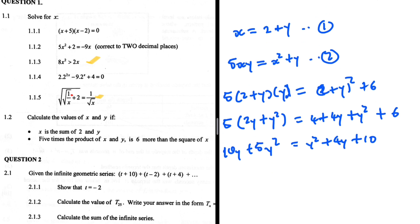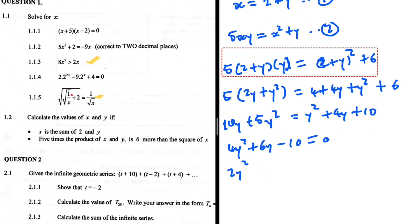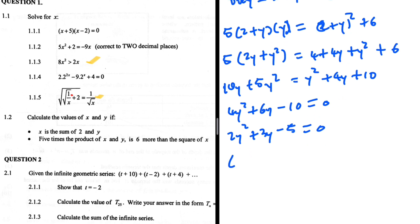5y squared minus y squared is 4y squared, 10y minus 4y is plus 6y, minus 10 equals zero. We can divide everything by 2: 2y squared plus 3y minus 5 equals zero. We can factorize this: (2y plus 5)(y minus 1) equals zero. That gives us 2y squared minus 2y plus 5y, which is plus 3y, then minus 5.